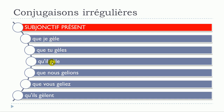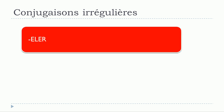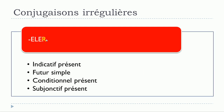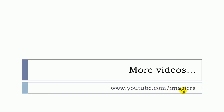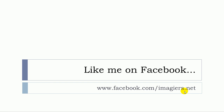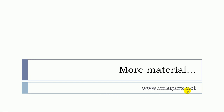So: que je gèle, que tu gèles, qu'il gèle, and then qu'ils gèlent. Remember that if we're talking about these verbs — the verbs of the first group ending with E-L-E-R — the following tenses will be modified: indicatif présent, futur simple, conditionnel présent, and then subjonctif présent. That's it! If you want more videos, visit youtube.com/imagier, like me on Facebook, and more material can be found at www.imagier.net. Have a great day, bye bye!